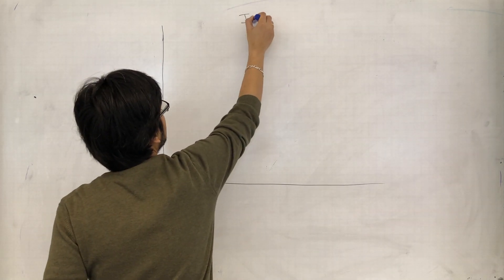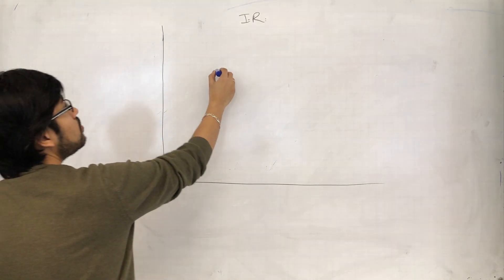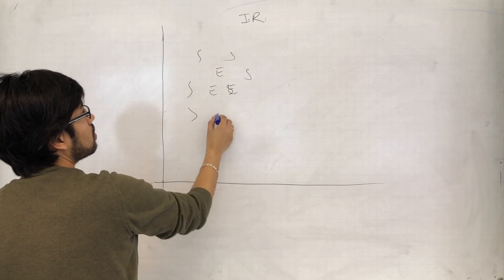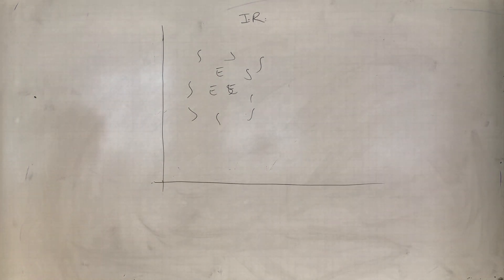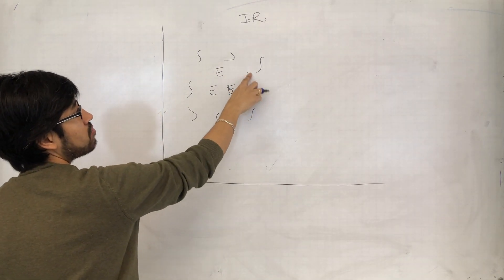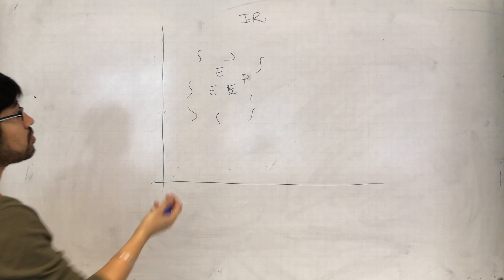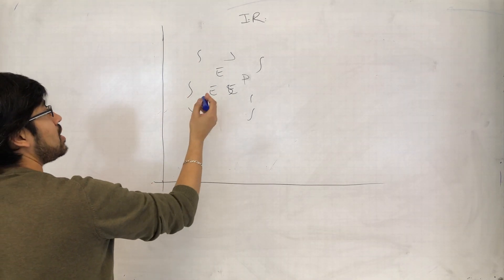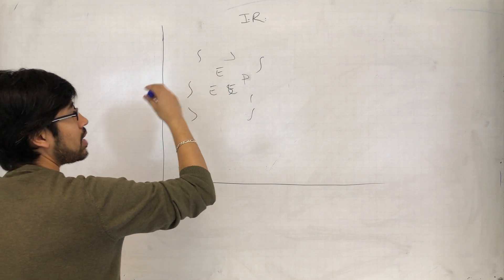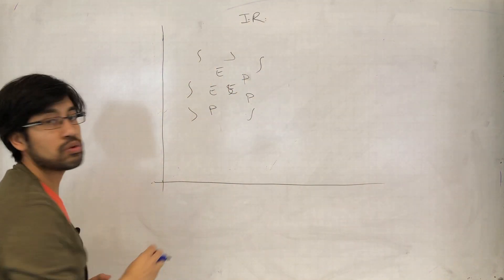Initial rate is all to do with this idea that when you have enzymes mixed with substrate, as soon as you mix enzyme and substrate, some of the substrate starts to get converted to product. That's what enzymes do. After that instant where the enzyme and substrate were added, as soon as those two meet, substrate starts to be turned into product.